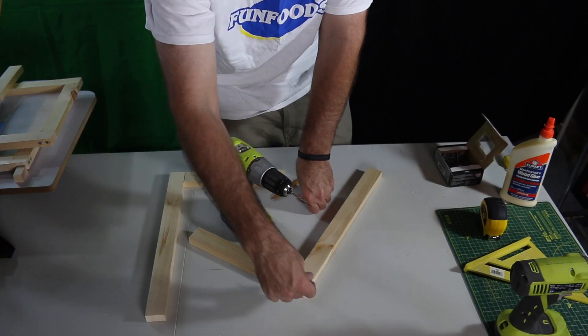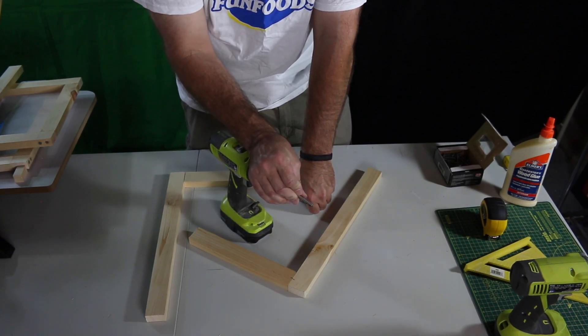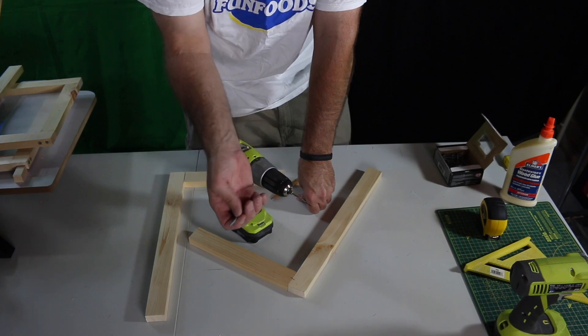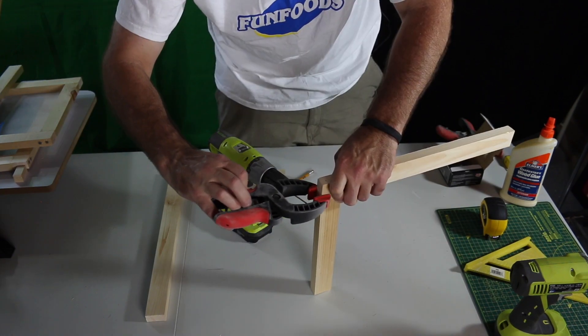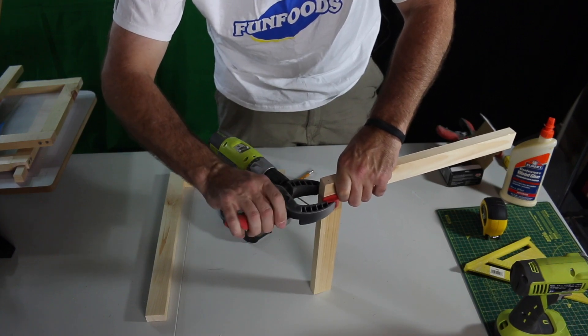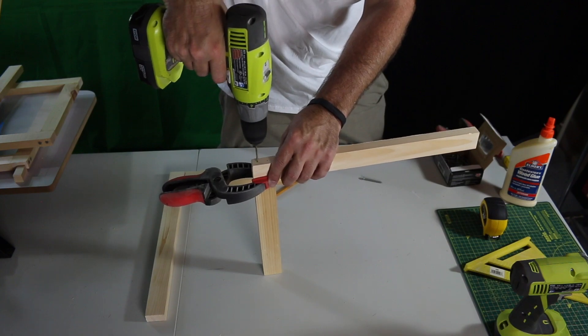Now you want to use a drill bit that's one size smaller, thinner than your actual screws. This way the screws will still hold into the wood. Just clamp two pieces together and carefully drill two of the holes.